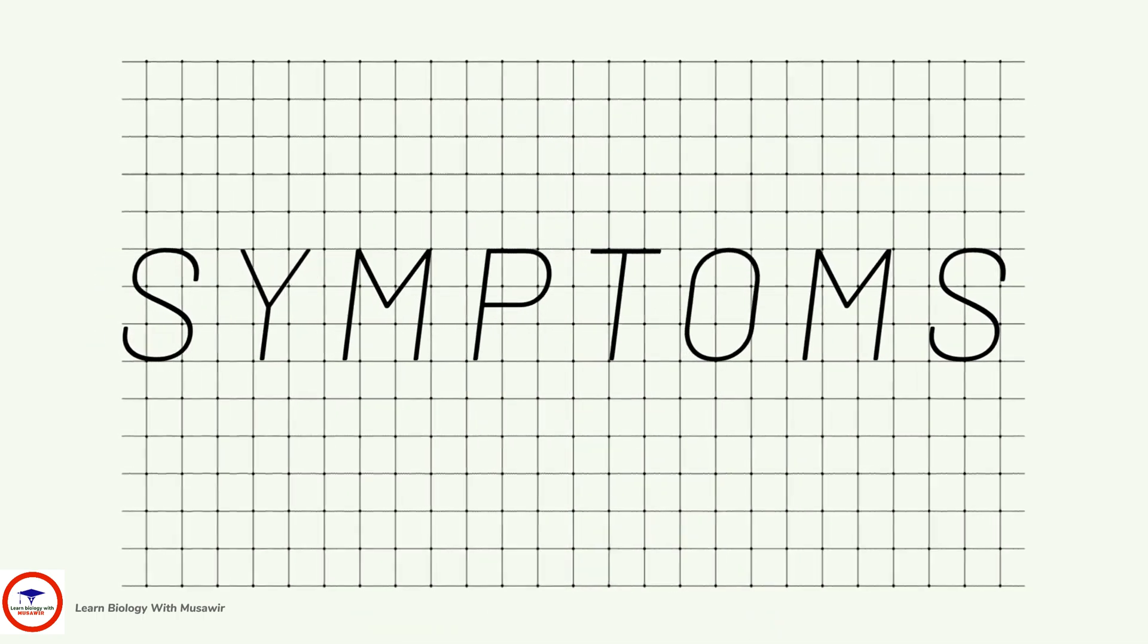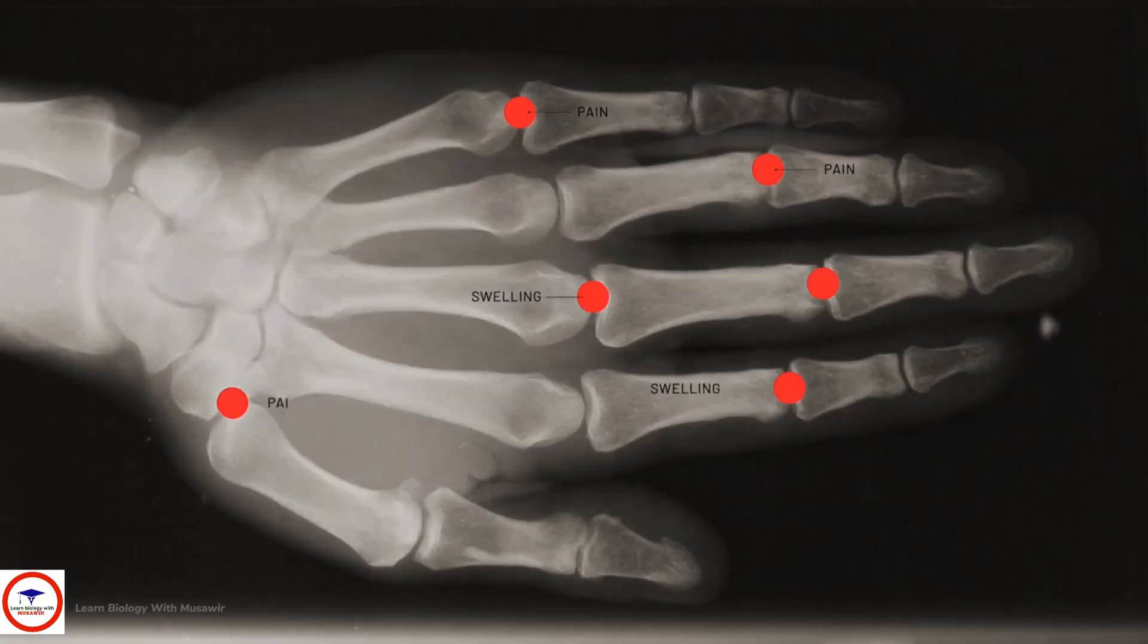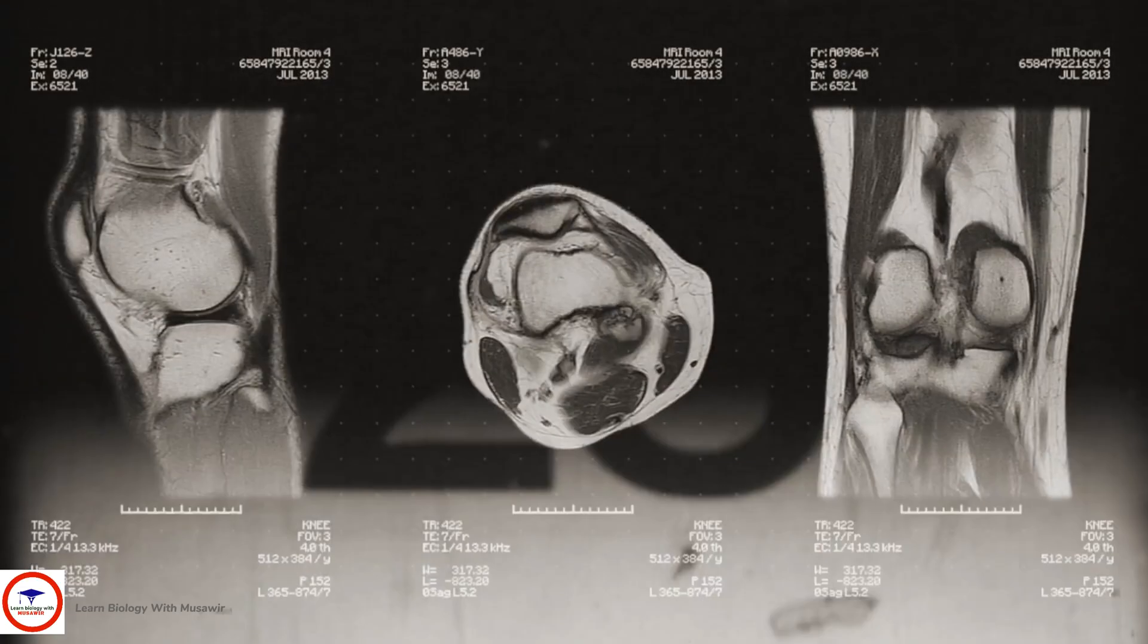One of the first symptoms of RA is pain and swelling in the joints. It commonly starts out in smaller joints in the hands and toes and spreads to larger ones like the wrists and knees.